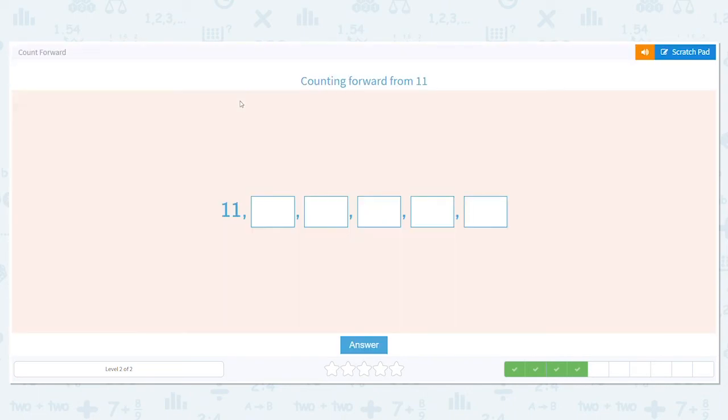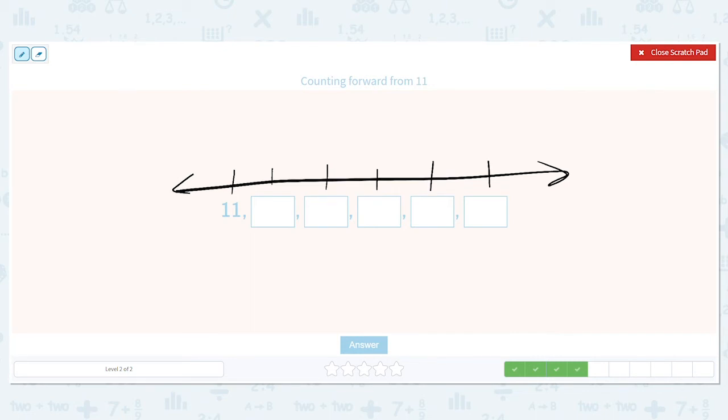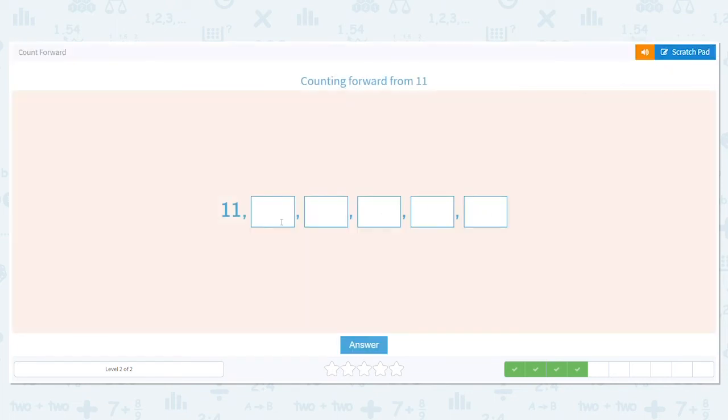This time we're starting from eleven. And I'm going to make my number line as if it were part of the problem. So, eleven, so we have eleven, then what would come next? Twelve, thirteen, fourteen, fifteen, sixteen. Good job.